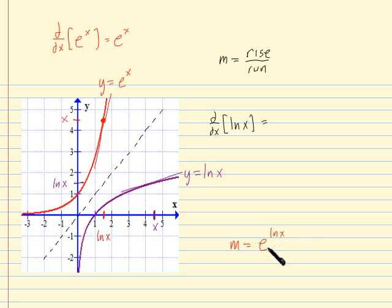But this simplifies, does it not? Remember, e and ln are inverses of one another. They will cancel each other out. So I'm left with simply x.